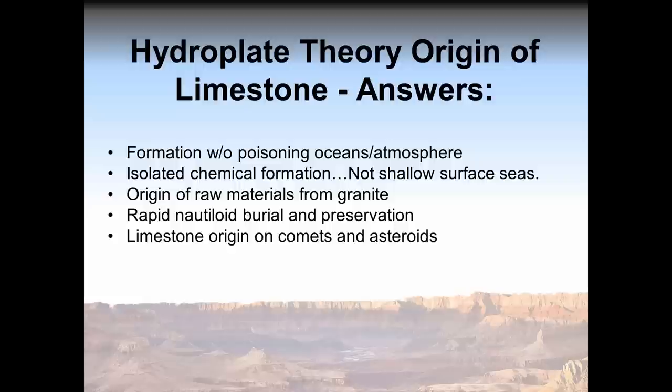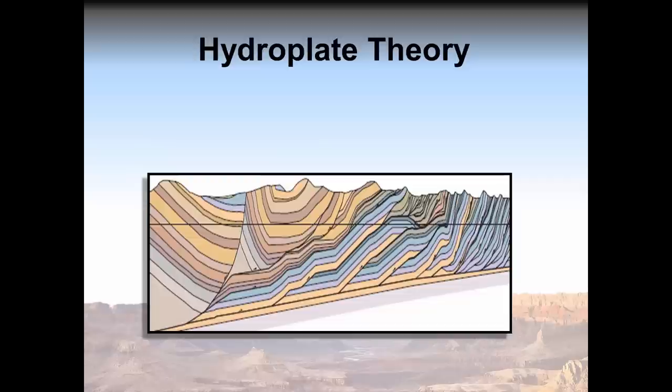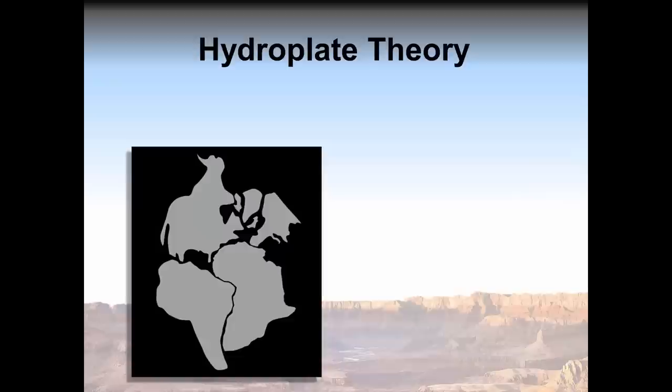Walt Brown's hydroplate theory answers many other seemingly intractable geology problems. These include physics-based, cause-to-effect formation of the globe encircling mid-oceanic ridge, the north-south orientation of major mountain ranges, overthrusts, plateaus, and ocean trenches, as well as a much better explanation for the jigsaw fit of continents, not to each other, but to the Earth's mid-oceanic ridge. Discussion of the entire theory can be freely reviewed at creationscience.com, or hit subscribe to see a full list of hydroplate theory videos that are available, and be notified of new videos.